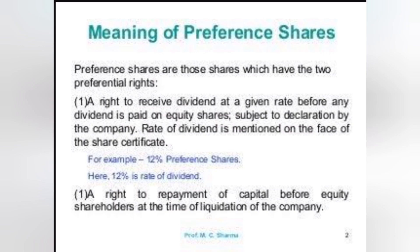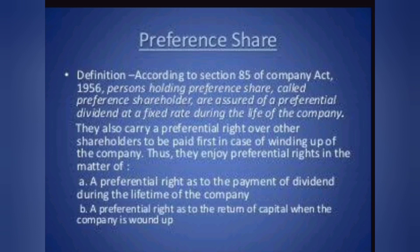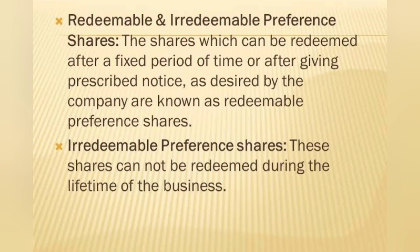The second preferential right is the right to repayment of capital before equity shareholders at the time of liquidation. According to Section 85 of the Companies Act 1956, persons holding preference shares — called preference shareholders — are assured of a preferential dividend. They will have the preferential right to get the dividend before the equity shareholder and to get the capital at the time of liquidation before the equity shareholders.